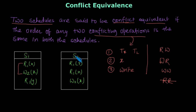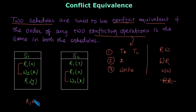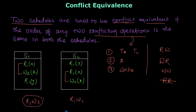Now in S2, we find the conflicting operations — read-read is not conflicting. The conflicting operation here is read-write: R1 and W2. In S1 the conflicting operation is R1 followed by W2, and in S2 also we have the order of conflicting operations as R1 followed by W2. So S1 and S2 are conflict equivalent.